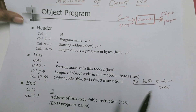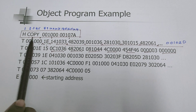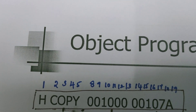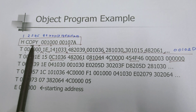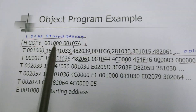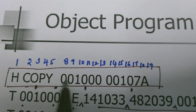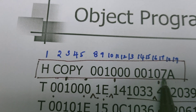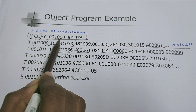Let us understand the same thing with an example. This is an example of an object program file. Look at the very first line — it begins with the letter H, meaning it is a header record, followed by the program name. To store the program name, there are 6 columns available, but here the program name contains only 4 letters, so the other 2 columns are left blank. Then 1000 is the starting address of the program — since the starting address is only 4 digits, the rest are filled with zeros. The length of the object program is 107A. Not all 6 columns are used, so it is pre-filled with zeros. This is the complete header record, containing the name of the program, starting address, and length of the object program.